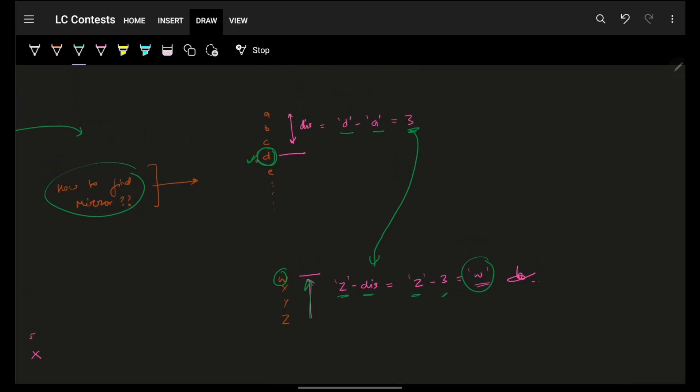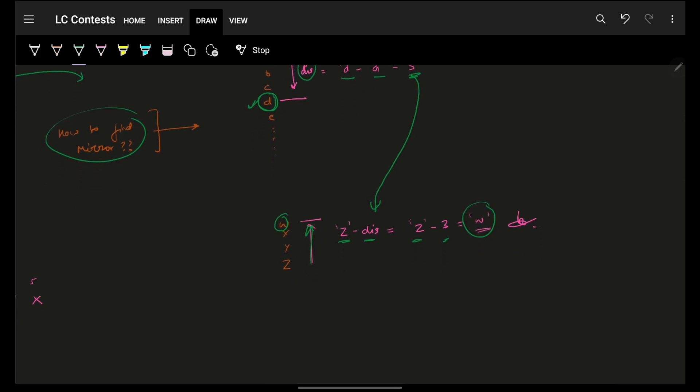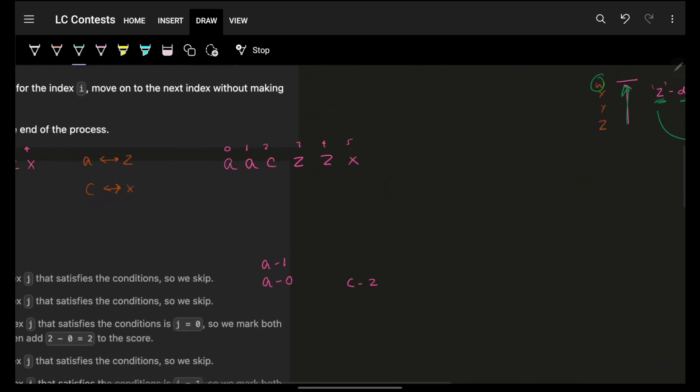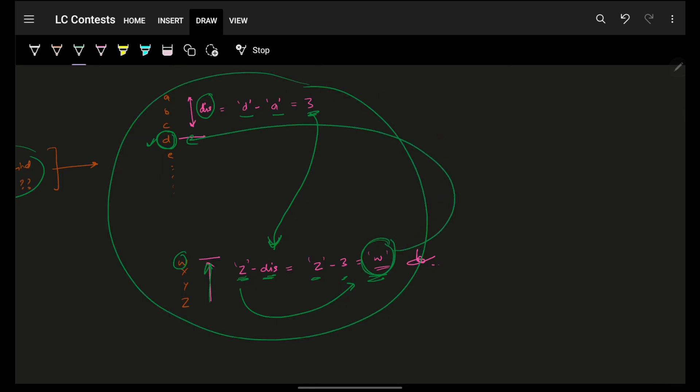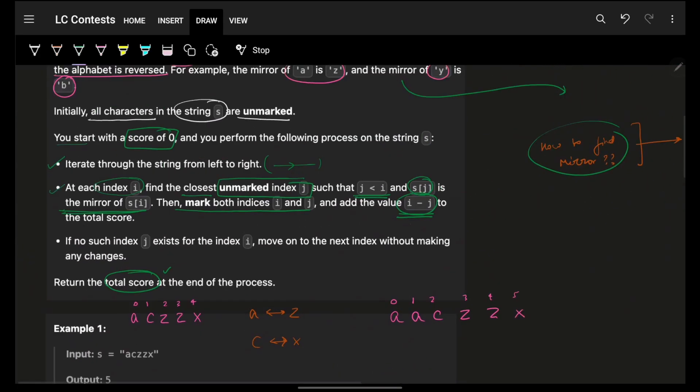Obviously, I have to find the similar element from the very end, which has the same distance. D from the start has a distance of 3. Simply, D minus A, distance of 3. Simply find the element which is from the end having the same distance of 3. So, Z minus the distance, the distance is the same thing which I found above, will be Z minus 3 is W.